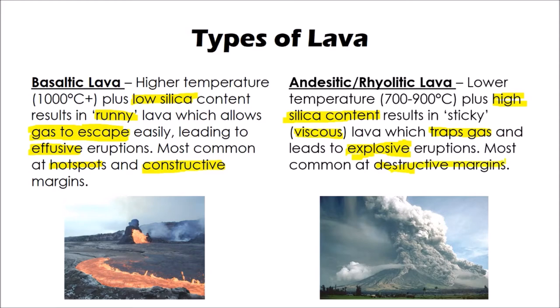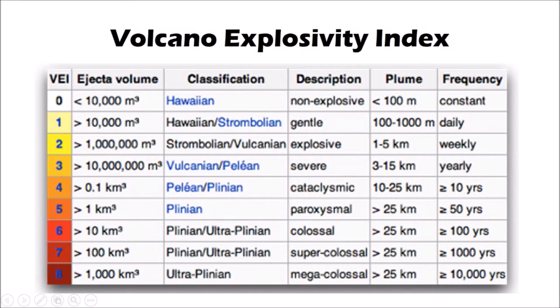Explosive eruptions tend to be quite common at destructive plate margins - the Andes in South America, the Caribbean, the Philippines, Japan - because of the type of magma being released. One thing we need to be aware of regarding volcanic hazards is how we measure the magnitude of those events. We use a scale called the Volcano Explosivity Index, often abbreviated to VEI, and this is a classification used to determine the scale of any given volcanic eruption.